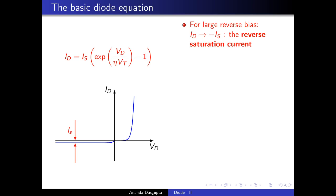When you put in a reverse bias, making Vd negative, the exponential becomes less than one, and for large negative Vd — large compared to Vt — this is nearly zero, so Id becomes −Is for large negative voltages. The magnitude of the reverse saturation current is given by Is. In this graph we have deliberately blown up the scale in the negative direction so that you can actually see the current, so this is not drawn to scale — the positive current would have blown off the range of the graph almost immediately.